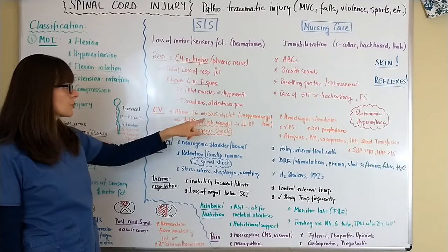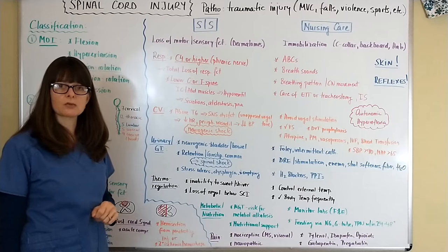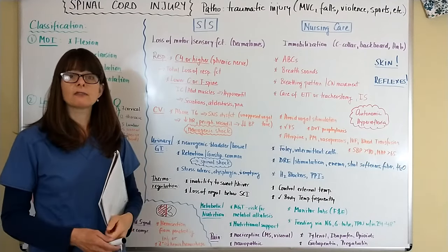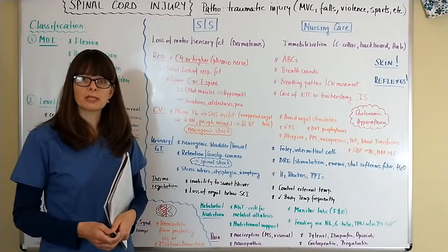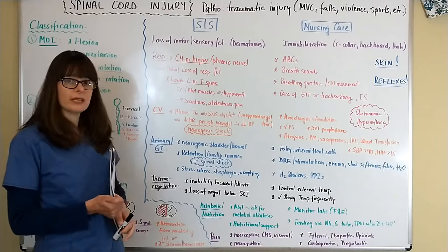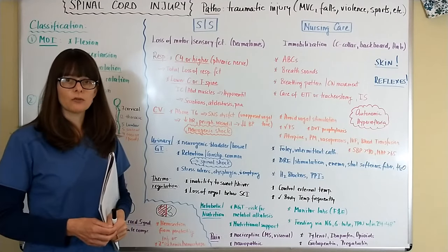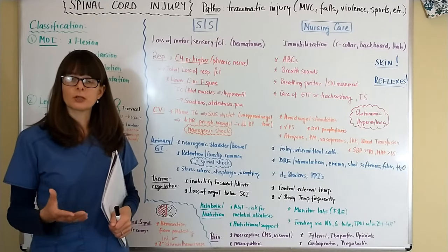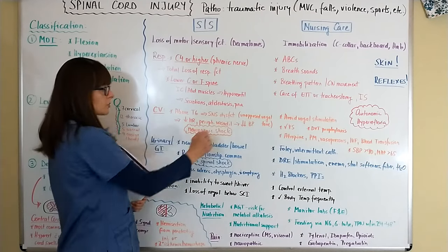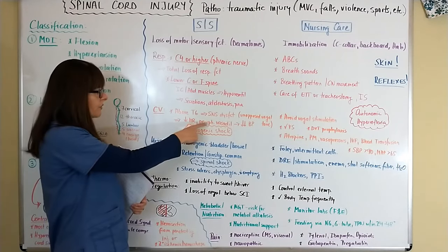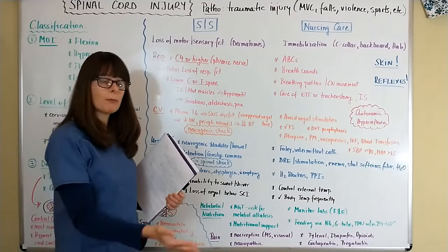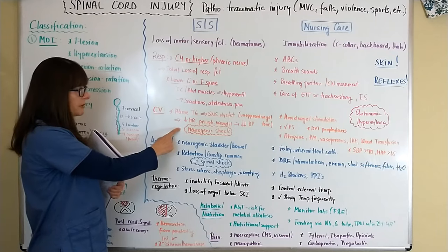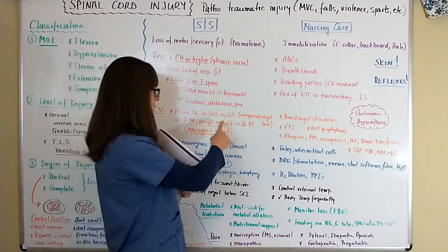Regarding the cardiovascular system, if the injury is above T6, there is dysfunction of the sympathetic nervous system. The communication of the sympathetic nervous system is interrupted, so the vagus nerve — the major nerve of the parasympathetic nervous system — becomes unopposed. Since the parasympathetic nervous system slows everything down, unopposed vagal tone leads to bradycardia and peripheral vasodilation. The blood pressure drops significantly, and this can lead to neurogenic shock.